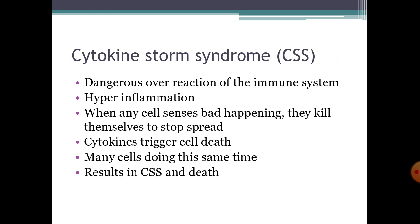CSS is a dangerous overreaction of the immune system — it can be called hyper-inflammation. When any cell senses something bad is going to happen, they kill themselves to stop the spread of the virus to other healthy cells. Cytokines trigger cell death, and when many cells do this at the same time, it may result in cytokine storm syndrome and eventually death.